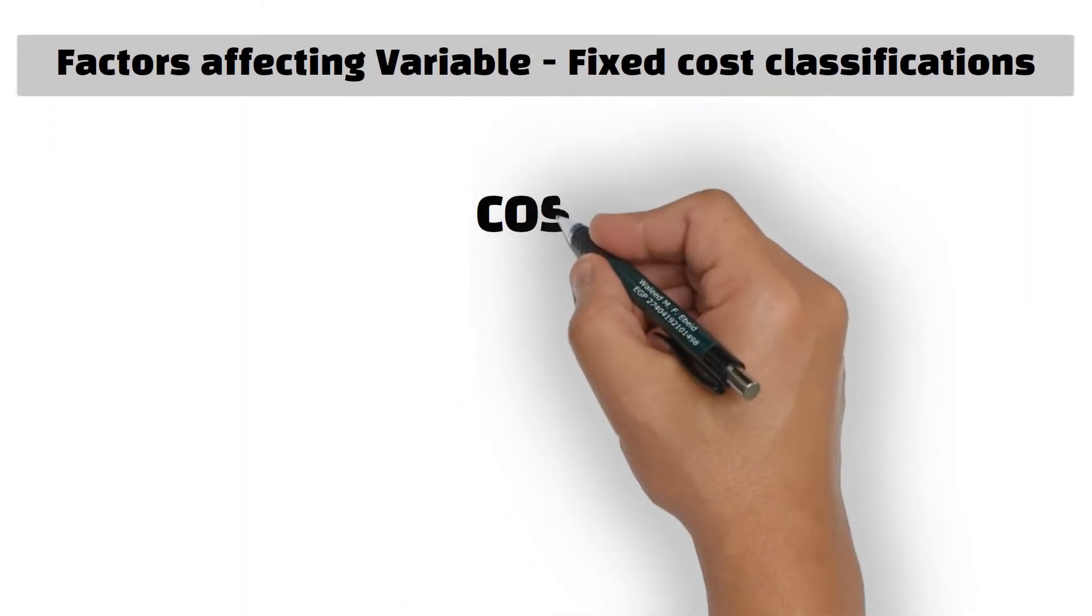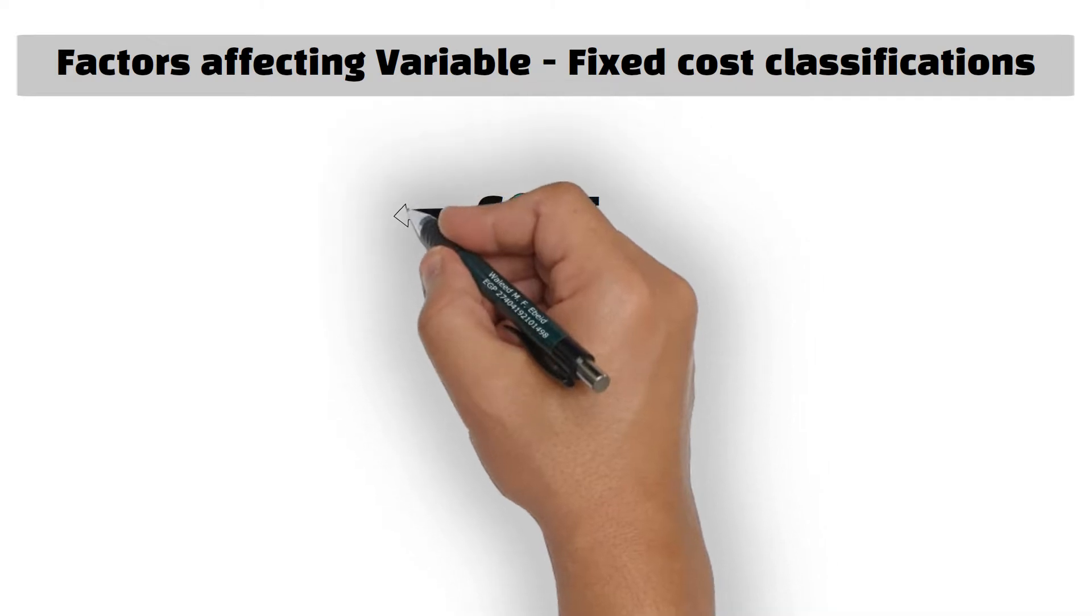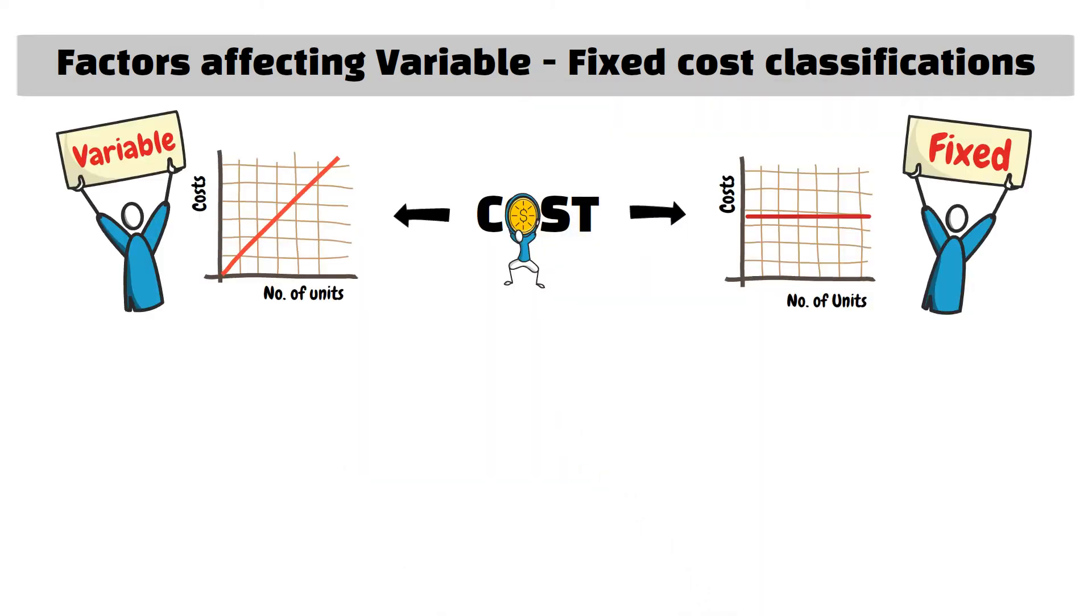There are several factors that affect the variable fixed cost classification. First, the same cost can sometimes be variable and other times fixed based on the terms of the related agreements.